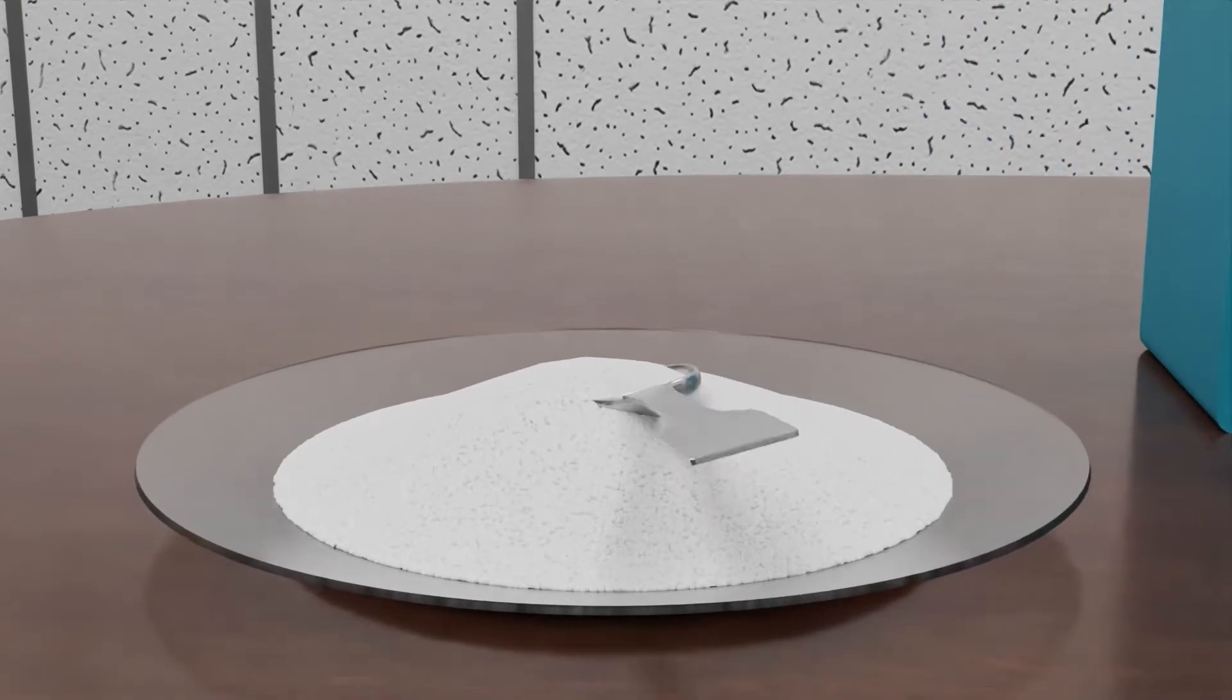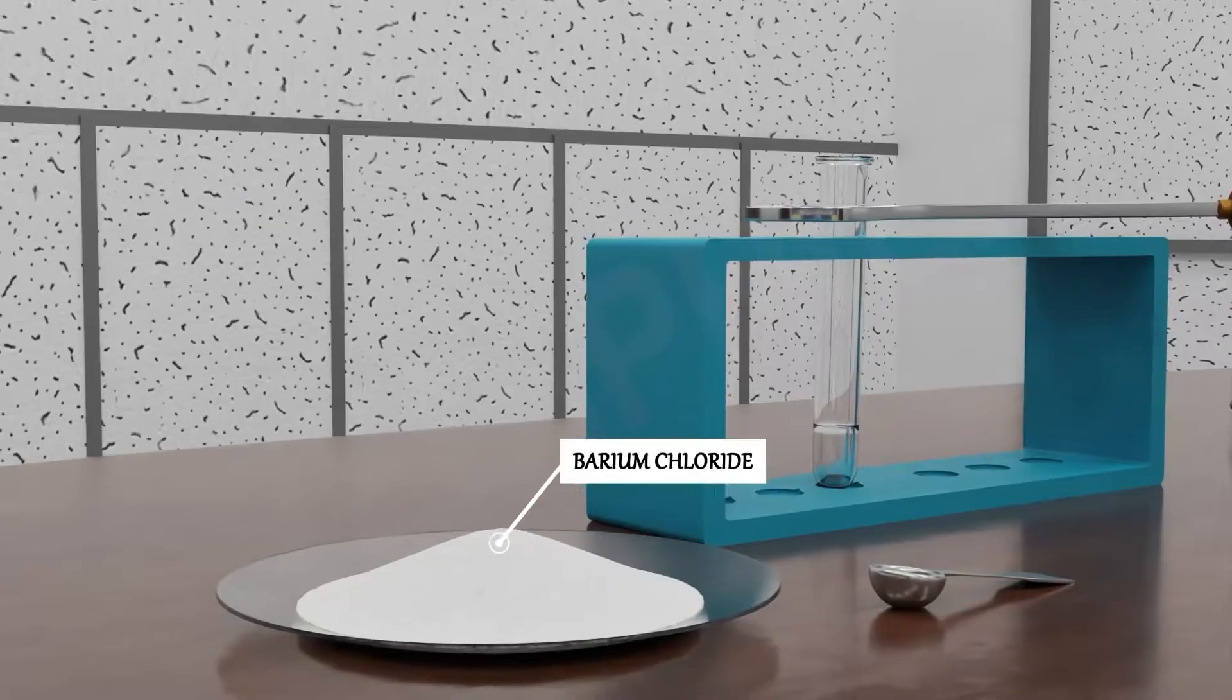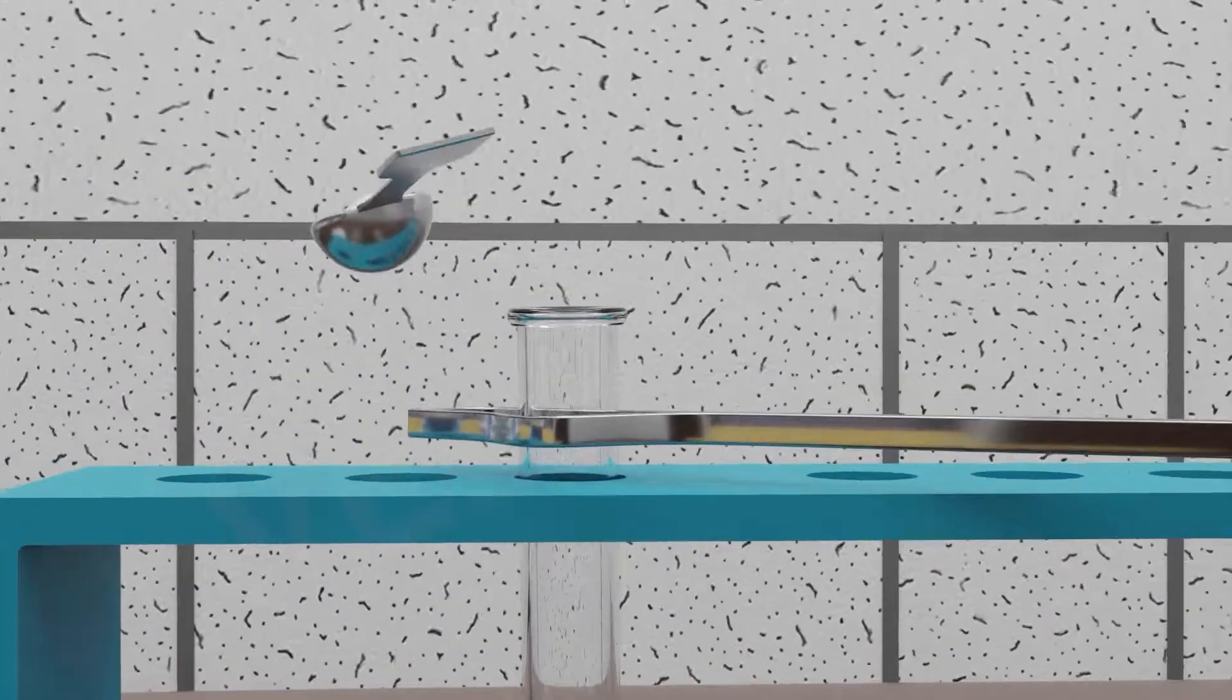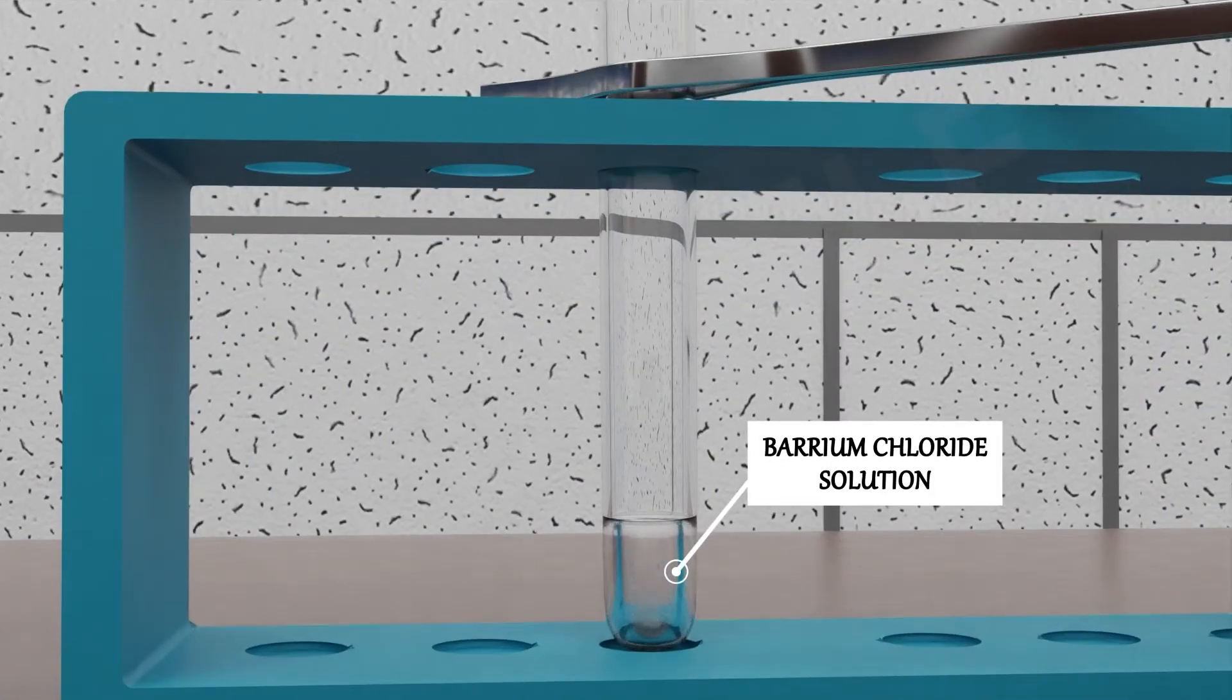We will dissolve it in the water to form sodium sulfate aqueous solution. Barium chloride also looks the same as sodium sulfate. We will make barium chloride solution with water again.